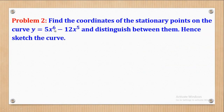Problem 2 says: find the coordinates of the stationary points on the curve y = 5x⁶ − 12x⁵, and distinguish between them. Hence, sketch the curve.